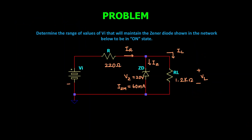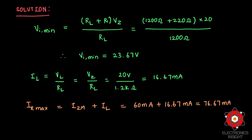Let us solve one problem related to line regulation with variable VI and fixed RL. We need to determine the range of VI values that will maintain the Zener diode in the on state. The given values are R equals 220 ohms, VZ equals 20 volts, IZM equals 60 milliamps, and RL equals 1.2 kilohms. Using the VI_min formula with all given values, we substitute to obtain VI_min. IL equals VL divided by RL, where VL equals VZ, giving IL equal to 16.67 milliamps.